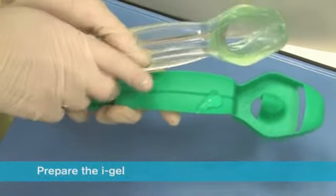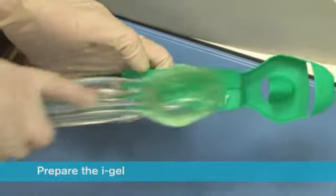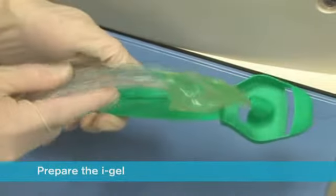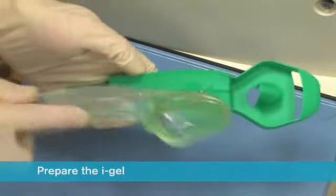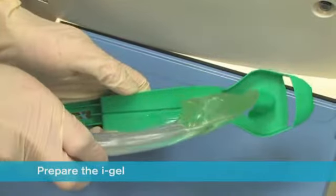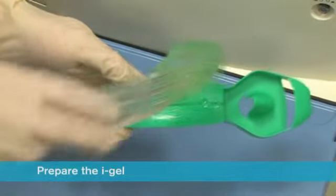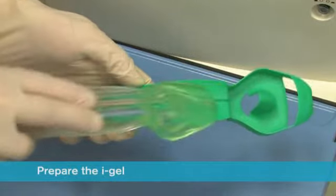Grasp the iGel with the opposite free hand along the integral bite block and lubricate the back, sides, and front of the cuff with a thin layer of lubricant. This process may be repeated if lubrication is not adequate.